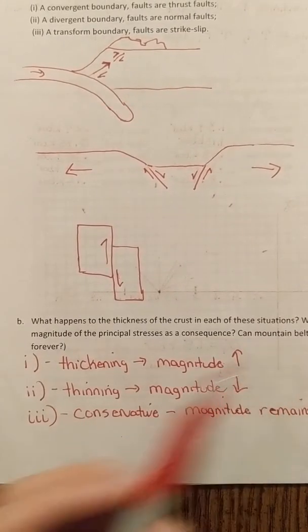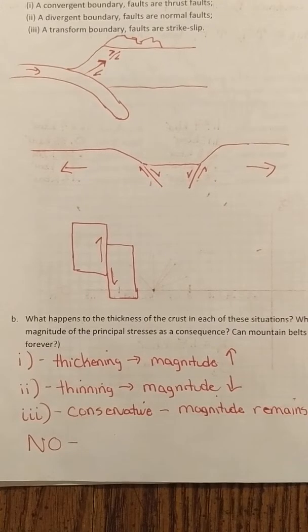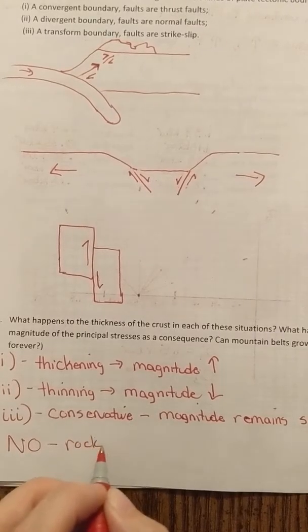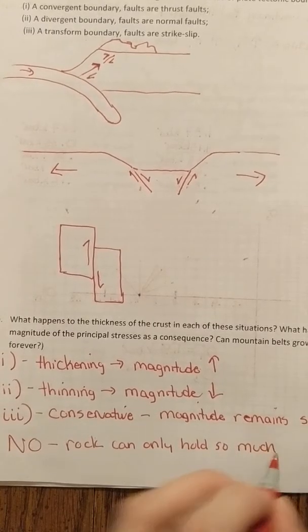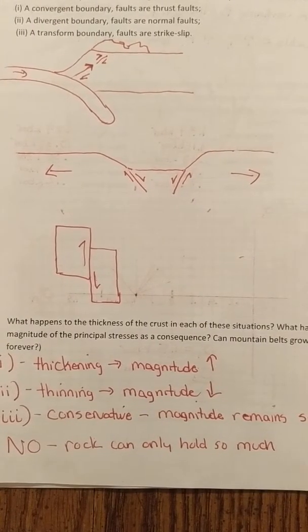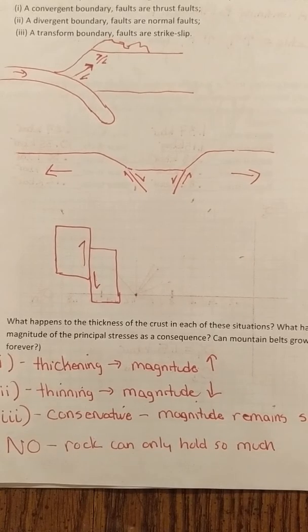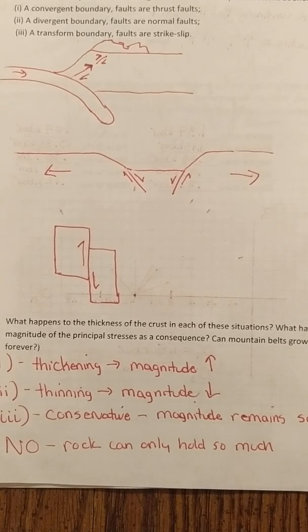Now in terms of can mountain belts grow in height forever? This is a big no. Rock only has a certain strength. Rock can only hold so much. We've seen this with the Coulomb failure. I showed you guys a classic example of this. The Himalayas are too tall. They cannot support themselves. So they are mechanically failing and basically flowing out into southeast China. So mountain belts cannot continuously grow. They are not mechanically strong enough to do that.